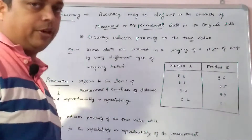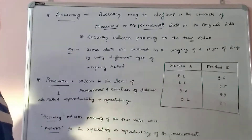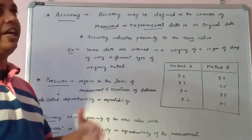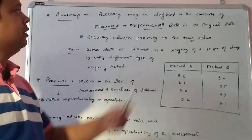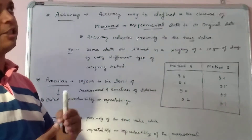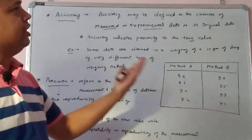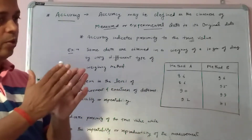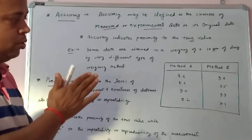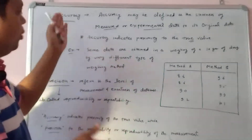Hello everyone. Today we will discuss accuracy and precision. Accuracy may be defined as the closeness of the measured or experimental value to its original data. So what is the closeness of the measured value or experimental value from the original data? It is actually defined under accuracy.